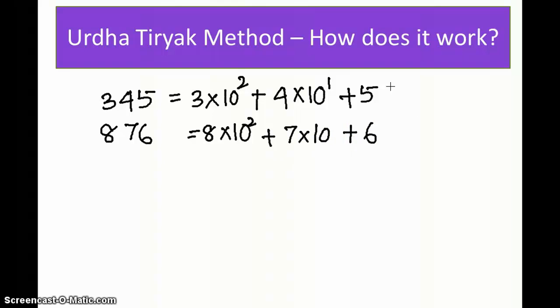Similarly, I can write 876 as 8 times 10² plus 7 times 10 plus 6. So now this represents ax² + bx + c, and this represents dx² + ex + f. The formula goes like this after that.